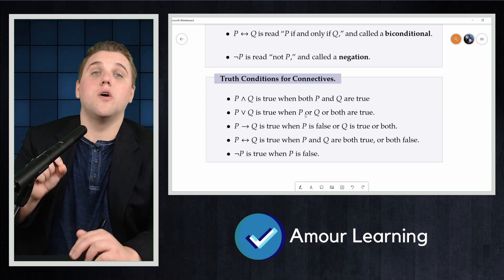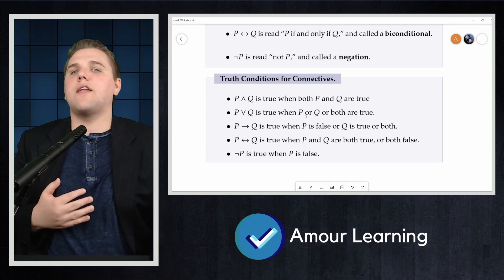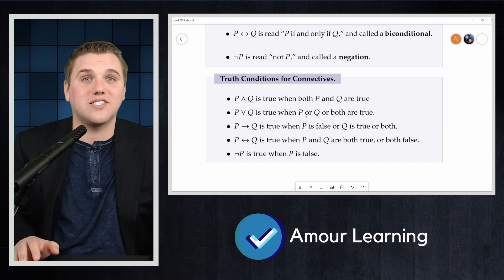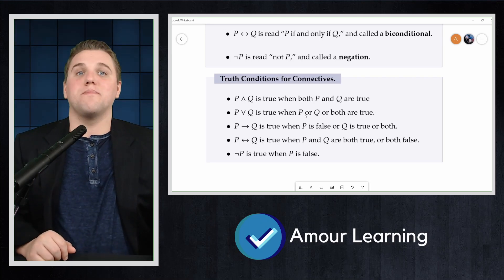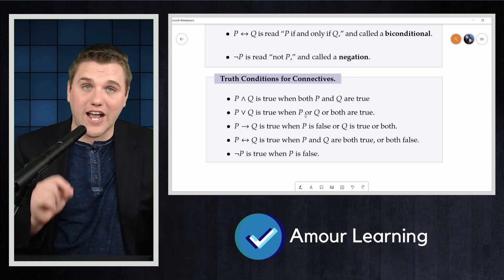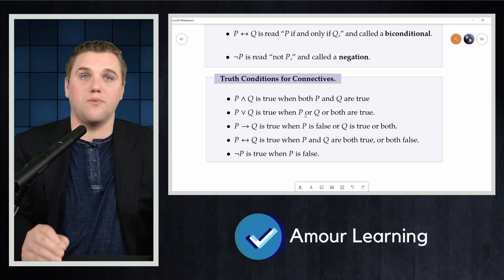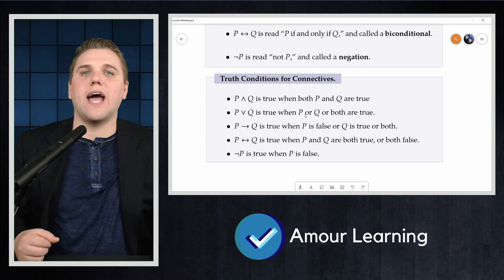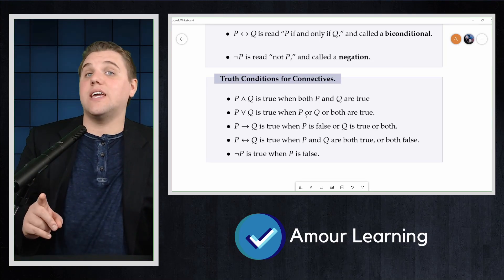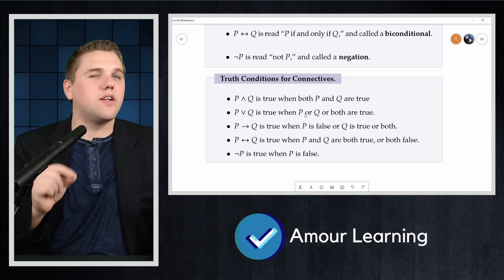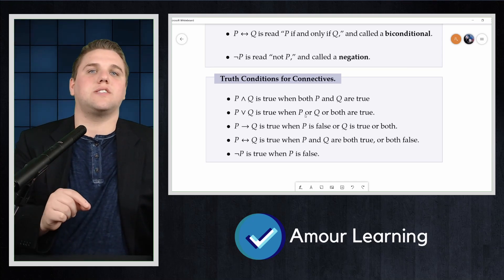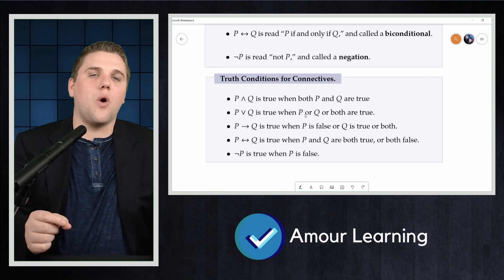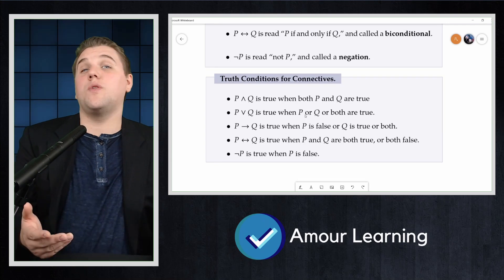P implies Q is true when P is false or Q is true or both. That one we'll discuss later on in the course a little bit more in detail. P if and only if Q is true when P and Q are both true or both false simultaneously. Not P is true when P is false. Note that for us, or is the inclusive or and not the sometimes used exclusive or, meaning that P or Q is in fact true even if both P and Q are true. As for the other connectives, and behaves the same way as you would expect, as does negation. The biconditional, if and only if, might seem a little strange, but you should think of this as saying the two parts of the statements are equivalent and that they always have the same truth value.